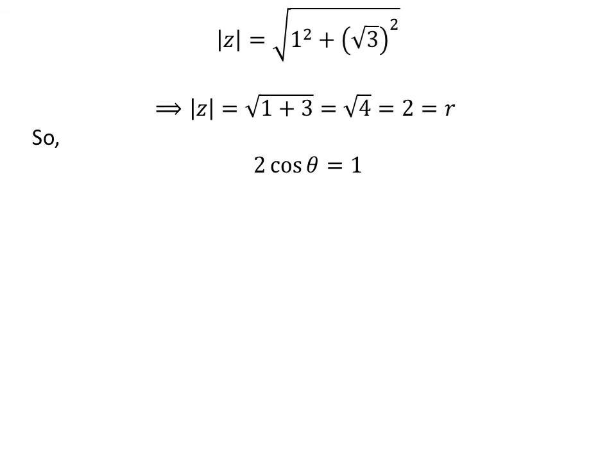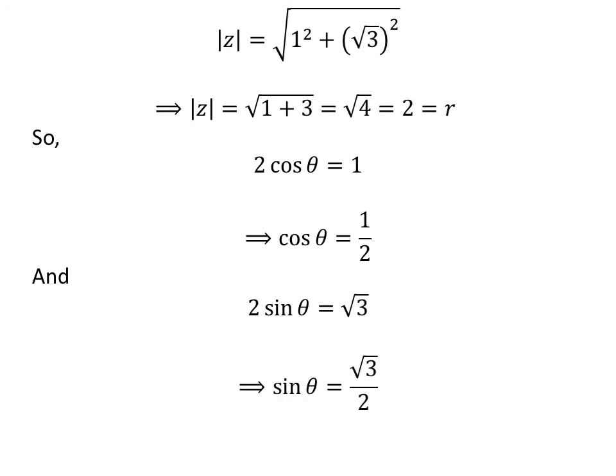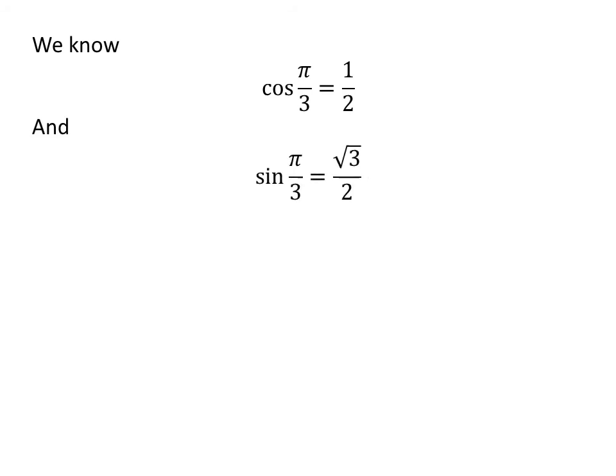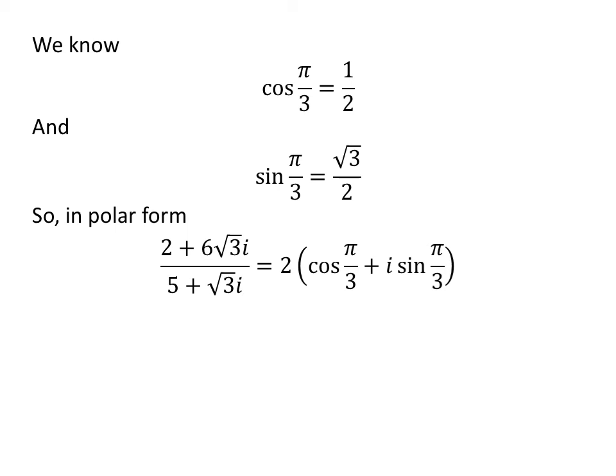Since r times cosine of theta equals 1, dividing both sides by 2 gives cosine of theta equal to half. Similarly, we get sine of theta equal to square root of 3 upon 2. We know cosine of pi upon 3 is half and sine of pi upon 3 is square root of 3 upon 2. So the polar form of the complex number 2 plus 6 times square root of 3 times iota upon 5 plus square root of 3 times iota is 2 times cosine of pi upon 3 plus iota times sine of pi upon 3.